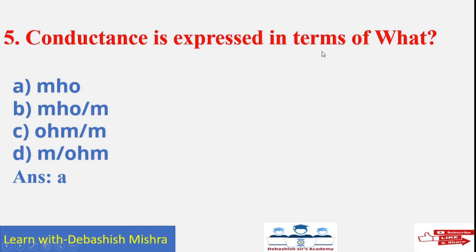Conductance is expressed in terms of what? Mho, Mho per m, ohm per m, m per ohm. Answer A is the correct answer, Mho. Because resistance opposite is conductance, the reciprocal of resistance is conductance. Unit of resistance is ohm and the reciprocal of this is Mho.